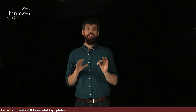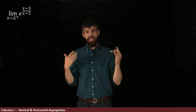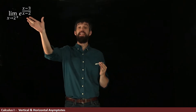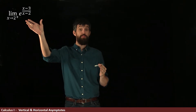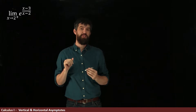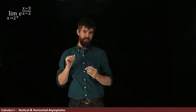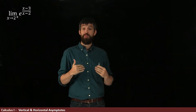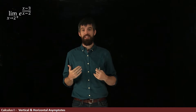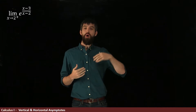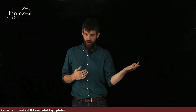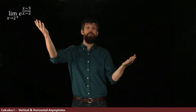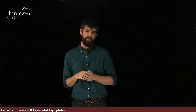In this video, we're going to look at a particular function: e to the rational function, e to (x minus 3) divided by (x minus 2). What I want to accomplish by the end of this video is to analyze what are all the vertical asymptotes of this particular function and what are all the horizontal ones.